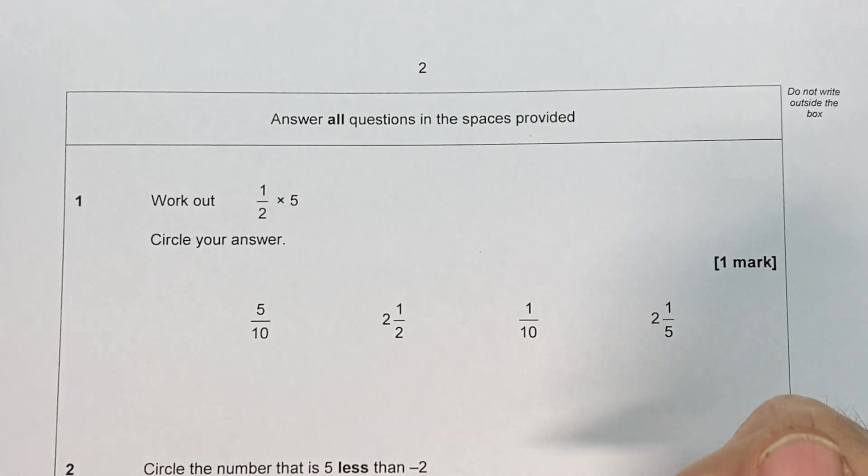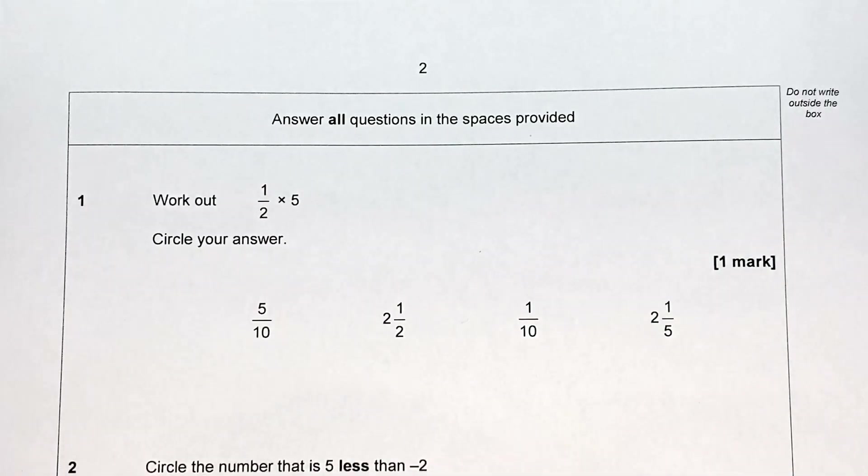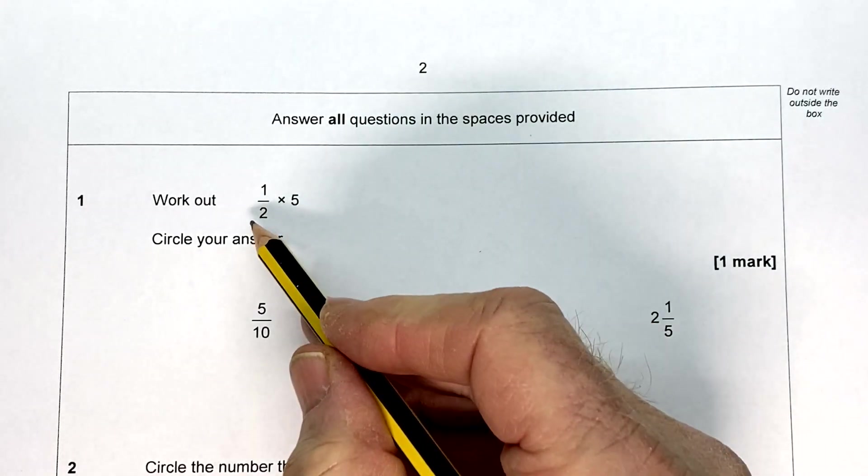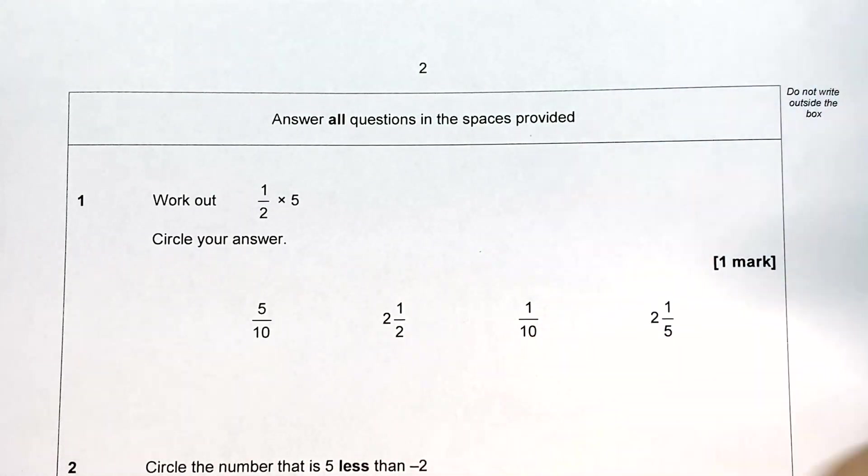We're looking at the first few questions on the 2018 Foundation Paper 1. First question: work out a half times five. Well, there are three ways of doing this really. You could say a half times five, well I know what a half of five is. A half of five is two and a half.